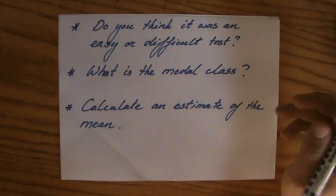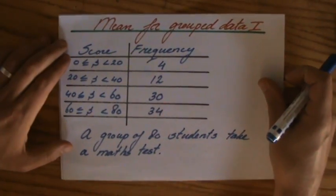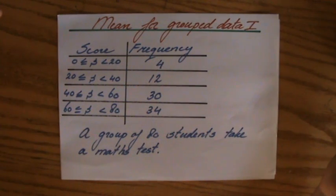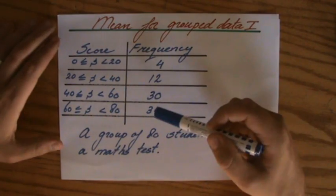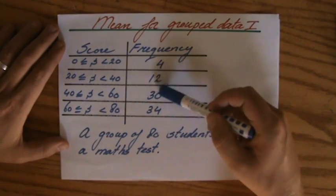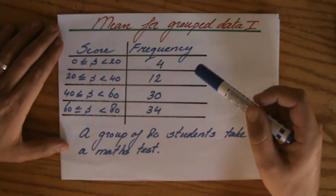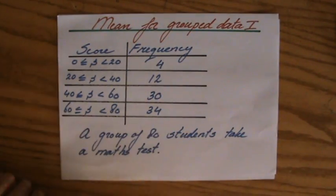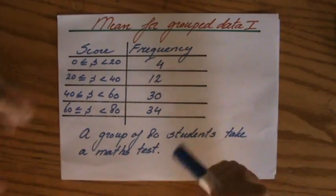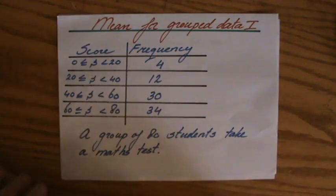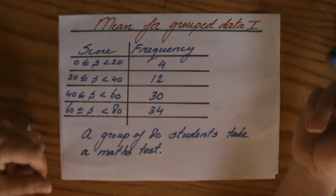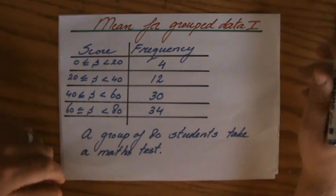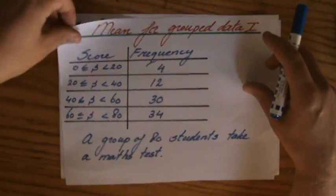Do you think it was an easy or difficult test? Now let's have a quick look again. Was it easy or difficult? Now I would say it was relatively easy. And why? Well, because most students scored a pass grade, scored more than 40 points. And even most of the students had between 60 and 80 points. And only very few students had between 0 and 20. So you could say, well, this was probably a relatively easy test.